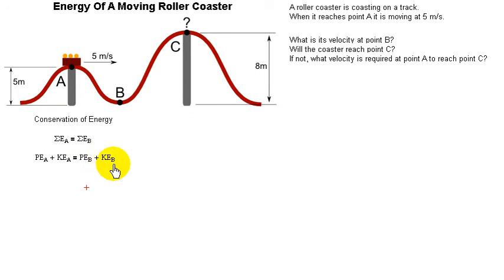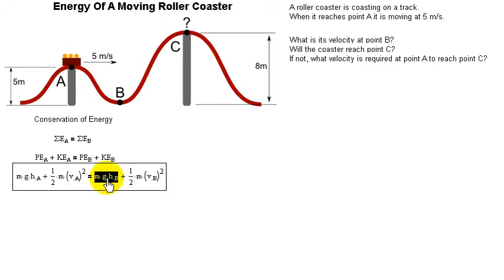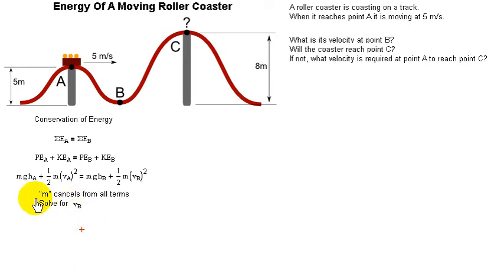The formulas for those are mg times HA plus one half MVA squared, and then mg times HB plus one half MVB squared. Since the height at point B is equal to zero, this term here will cancel out. Also, there's an M in each term that cancels out.